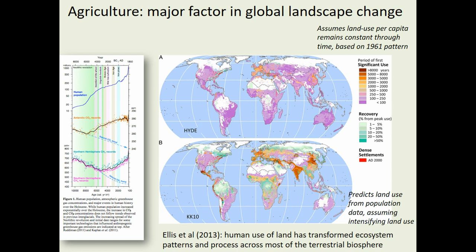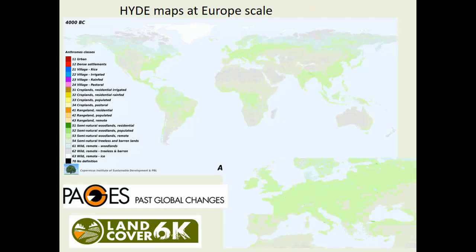I'm going to focus on Europe. This is one of the models which has been created by the modelers — this is the work of HIDES — one of the HIDE maps created for Europe. You can download these and there are different time slices represented. I'm only going to show you one: this is for 4,000 BC, which is the time frame we're interested in. As you can probably see, the vast majority of Europe during this time frame is pretty much dominated by woodlands.